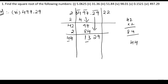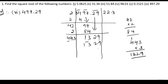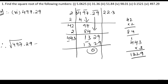To get 9 in the units, we know 3 squared is 9. So we take 3: 3 into 3 — 3 times 3 is 9, 3 times 4 is 12, 1 plus 3 times 4 is 12, plus 1 is 13. So we write 3 here. We get 1329 and the remainder is 0. Therefore, the square root of 497.29 is 22.3.